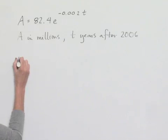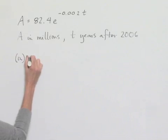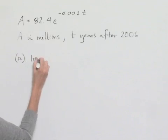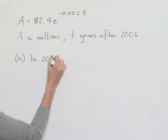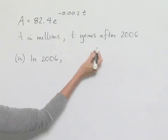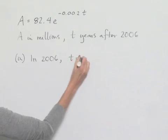Let's start with Part A, where we're asked to find the population in the year 2006. Well, in the year 2006, that would be 0 years after 2006, so t would equal 0.